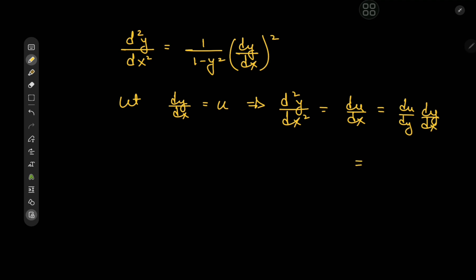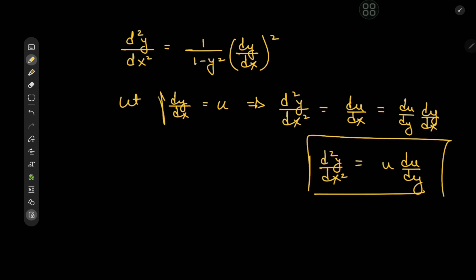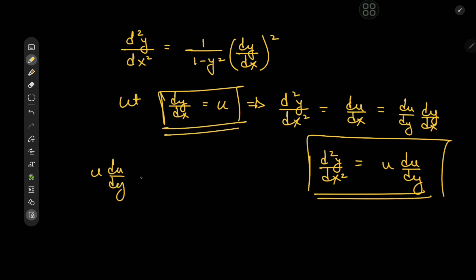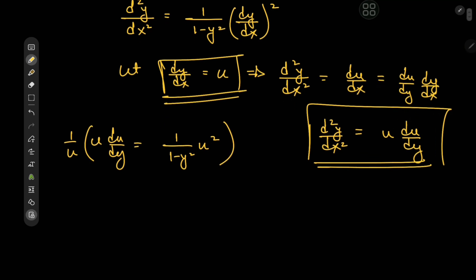Now dy/dx is just our u variable, so we have u times du/dy equal to the second derivative. Making use of our transformations, the differential equation looks like u times du/dy equal to 1/(1 minus y squared) times u squared. We can divide through by u — bear in mind this means we lose one solution corresponding to u equal to 0, but this implies y prime is 0 and y is just some constant of integration c, so we're not missing anything exciting there.